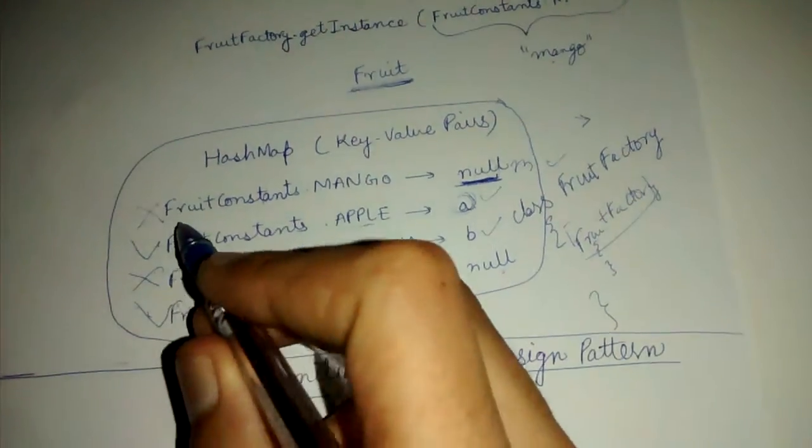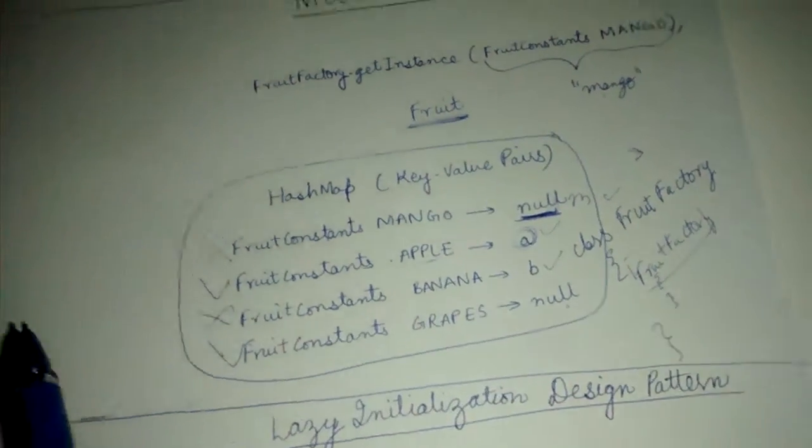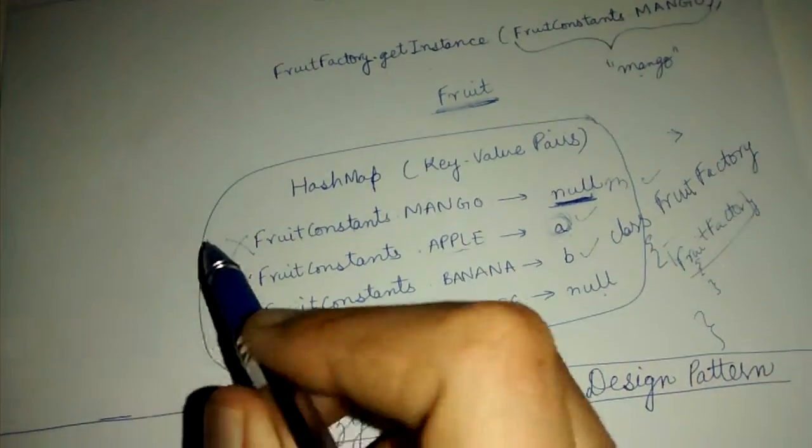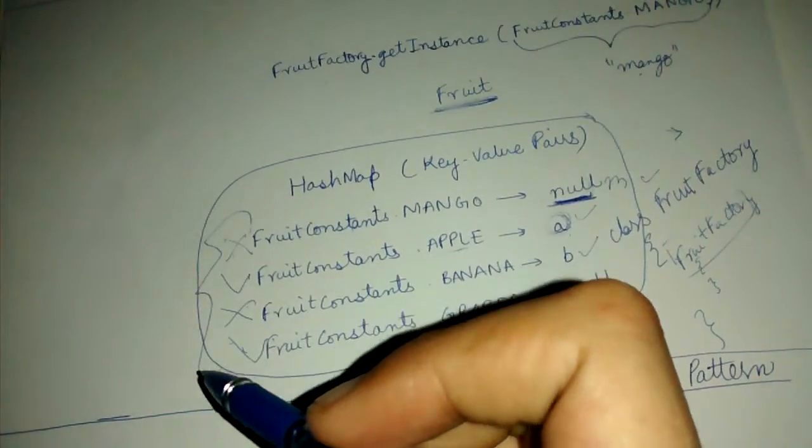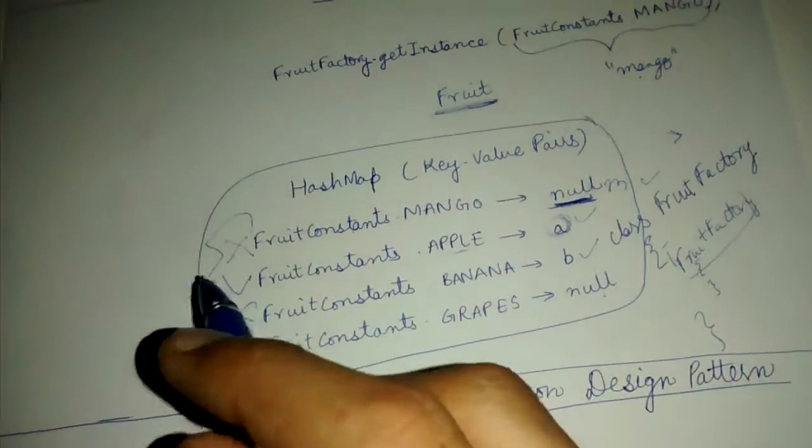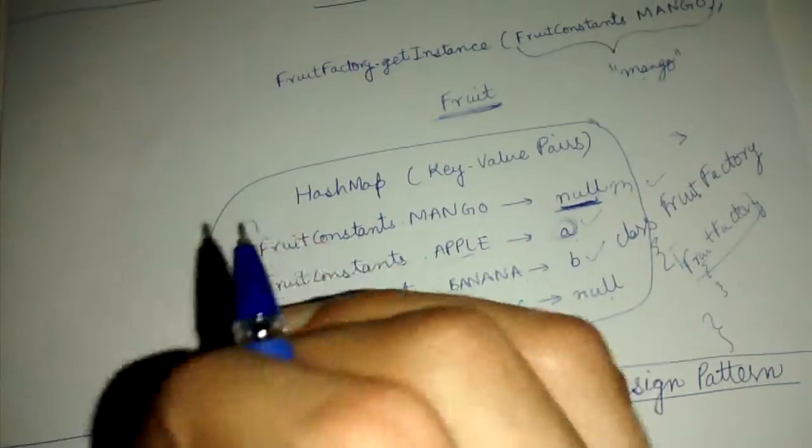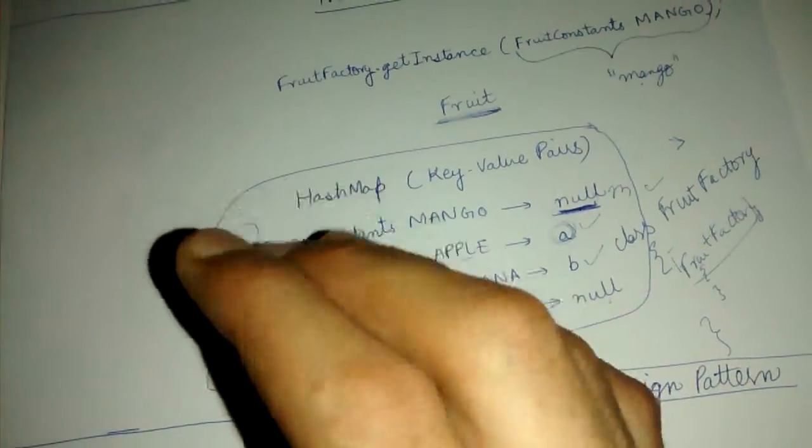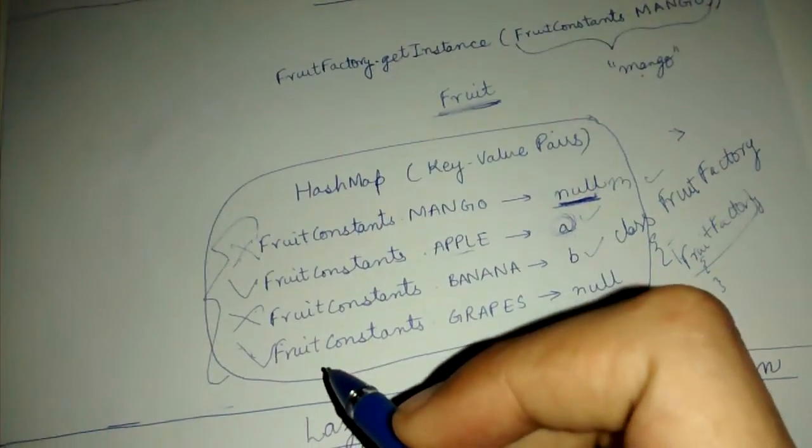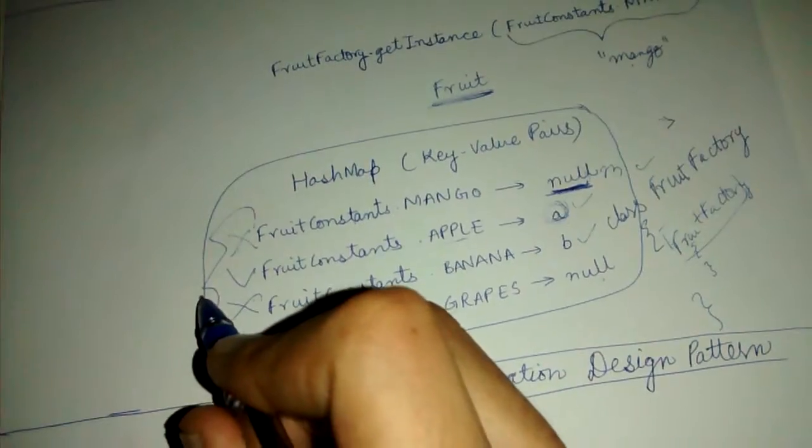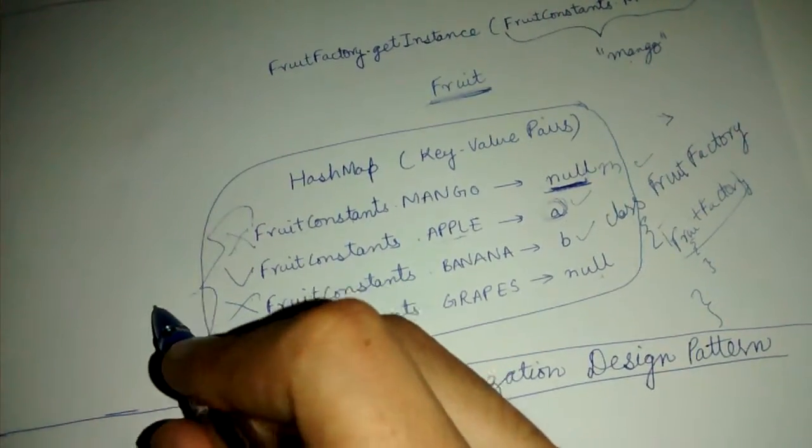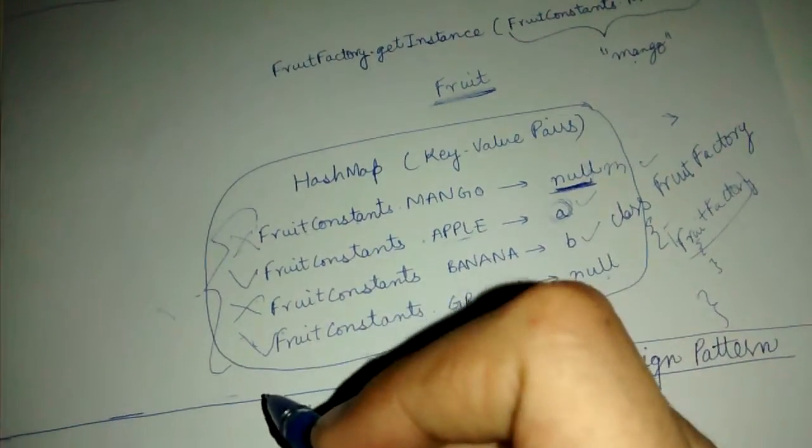Another thing we are not doing is this. The other way would be to create all the fruits in the beginning when your program is initially running, when your application is initially loaded. You create all the fruits one by one. That way, your application will take a lot of time to load in the beginning.